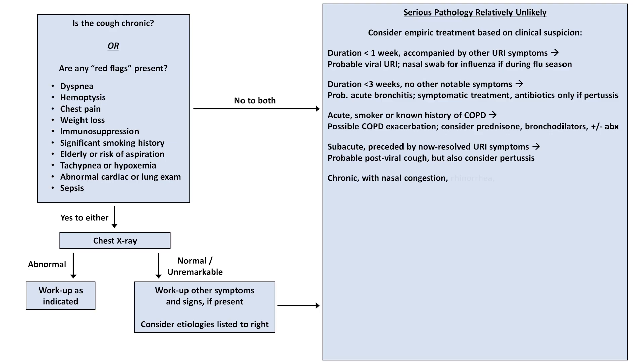If the cough is chronic and accompanied by nasal congestion, rhinorrhea, sneezing, and or sinus pressure, consider empiric treatment for upper airway cough syndrome, which can include antihistamines, decongestants, and or nasal steroids, depending on the suspected subtype.